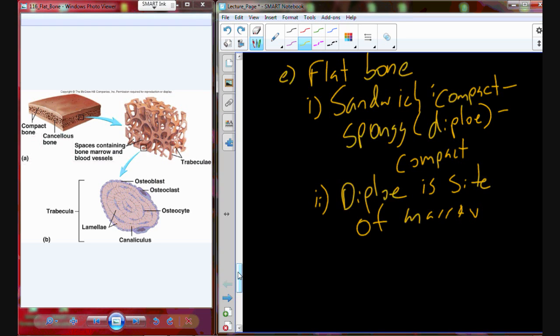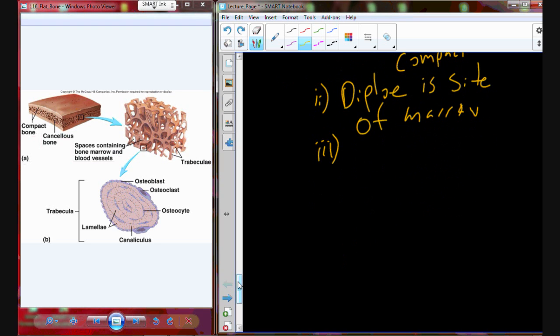The diploe or the spongy bone is going to be the site for marrow in these flat bones. This is a really big target, and so a lot of times the flat bones are what are going to be targeted for bone marrow capture. You might get bone marrow donation from the sternum or from the hip. They could do the skull, and that would be stupid. If they can get enough from the hip and the sternum, it's easier to get in there, and that's partially because of that anatomical structure.